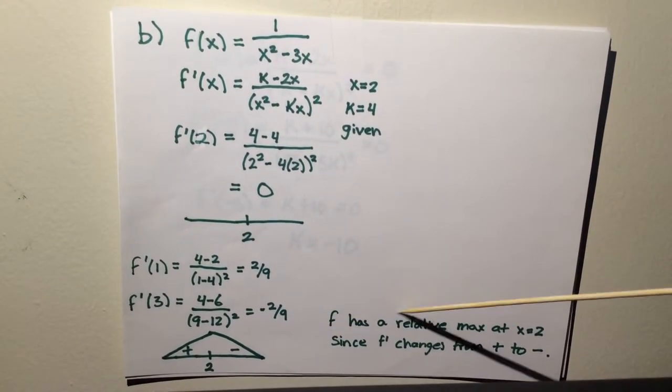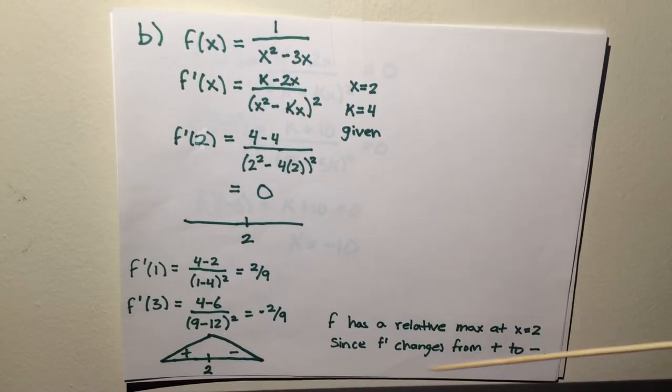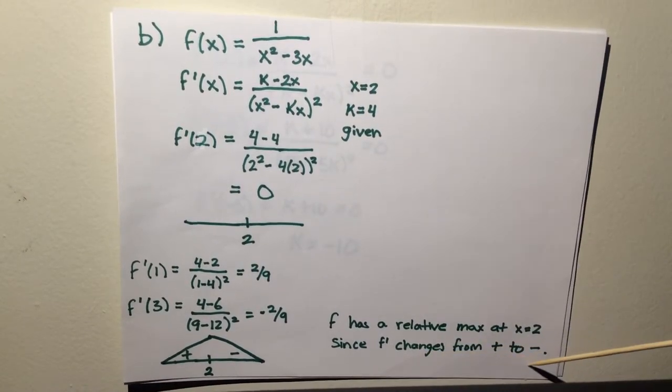Therefore, f has a relative max at x equals 2, since f prime changes from positive to negative.